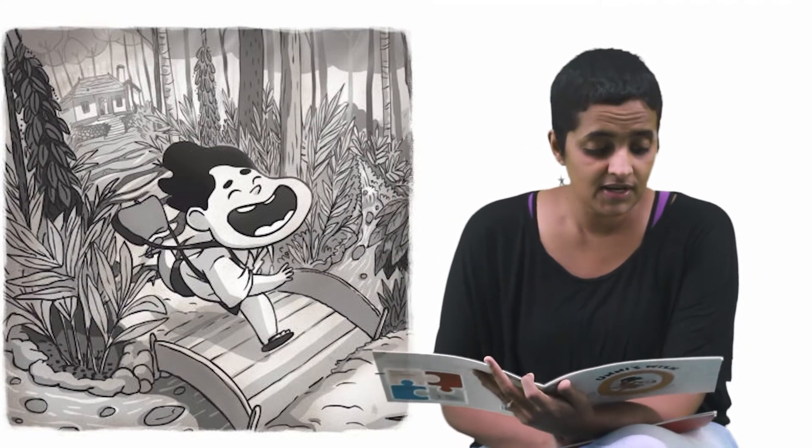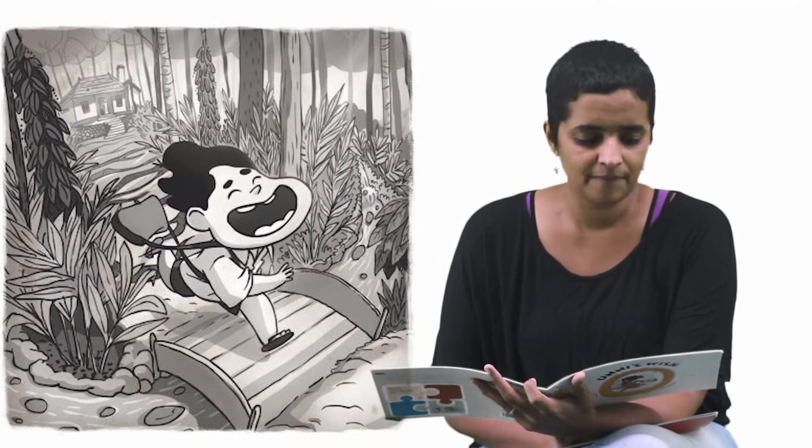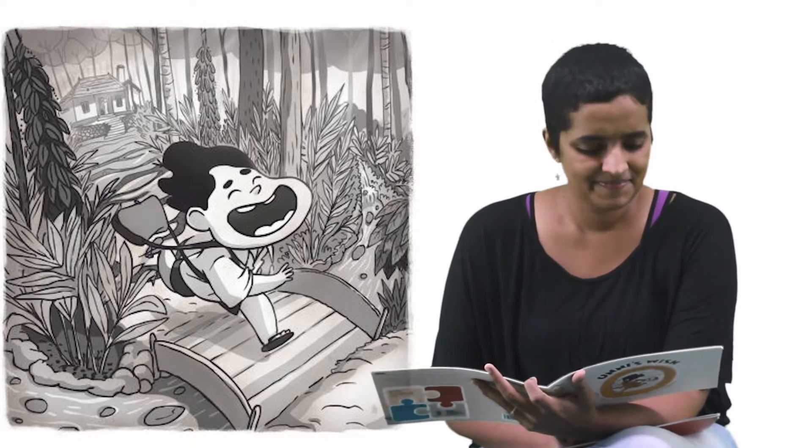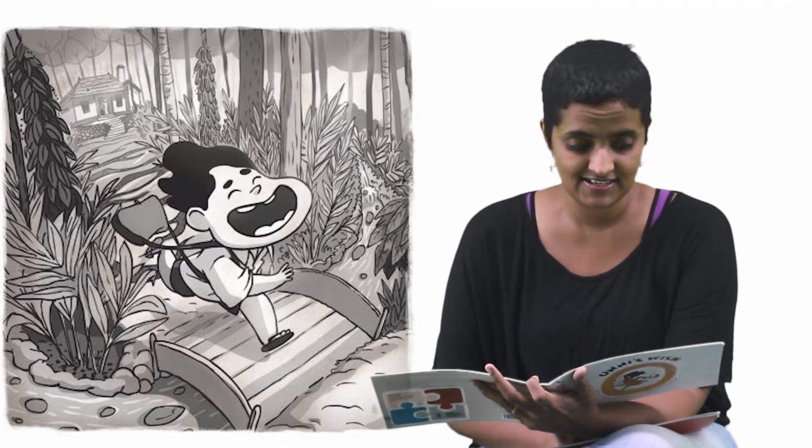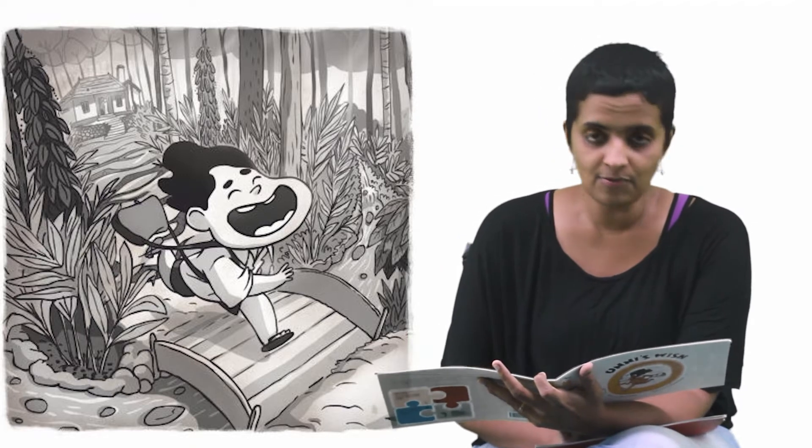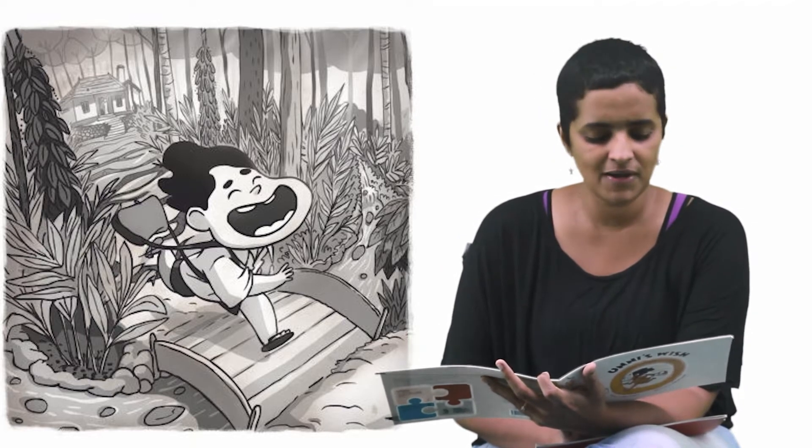After breakfast, Unni pulls on his warm uniform. Bye Amma! Unni hurries through the forest towards the coffee estate. His best friend Ammu lives there. There she is waiting at him.